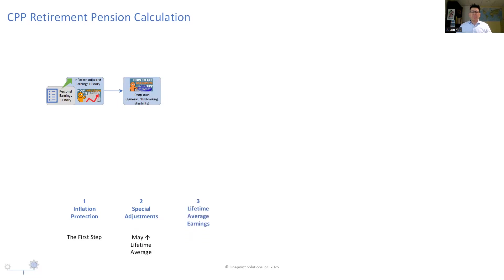Once your special adjustments have been applied, the third step is to calculate your lifetime average earnings. Your lifetime average earnings is a single number that is meant to represent what you put into the CPP program. If the total possible pension credits were represented by a pie, your lifetime average earnings would be the size of your personal slice of that CPP pie.